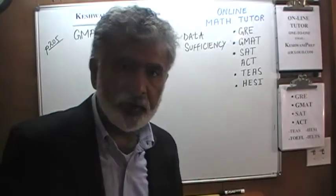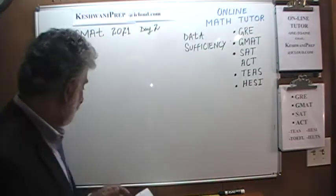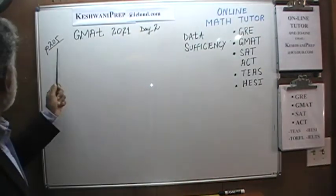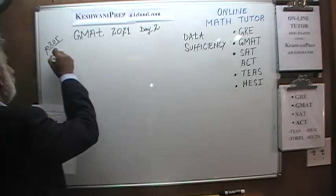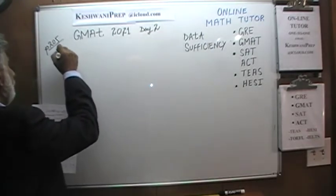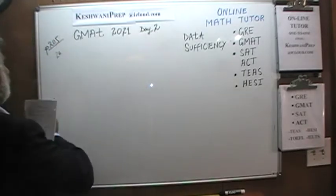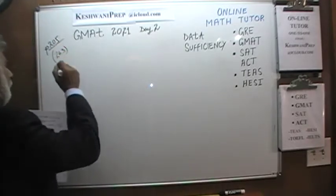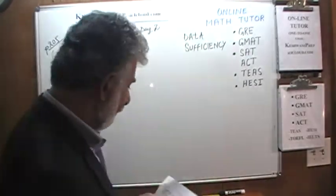Yesterday we started the story and we did the multiple choice problems. Today we are going to do data sufficiency problems — we are going to alternate every other day. The data sufficiency problems began on page number 205. Number 1 is problem number 263, which means that there are 260 multiple choice problems.